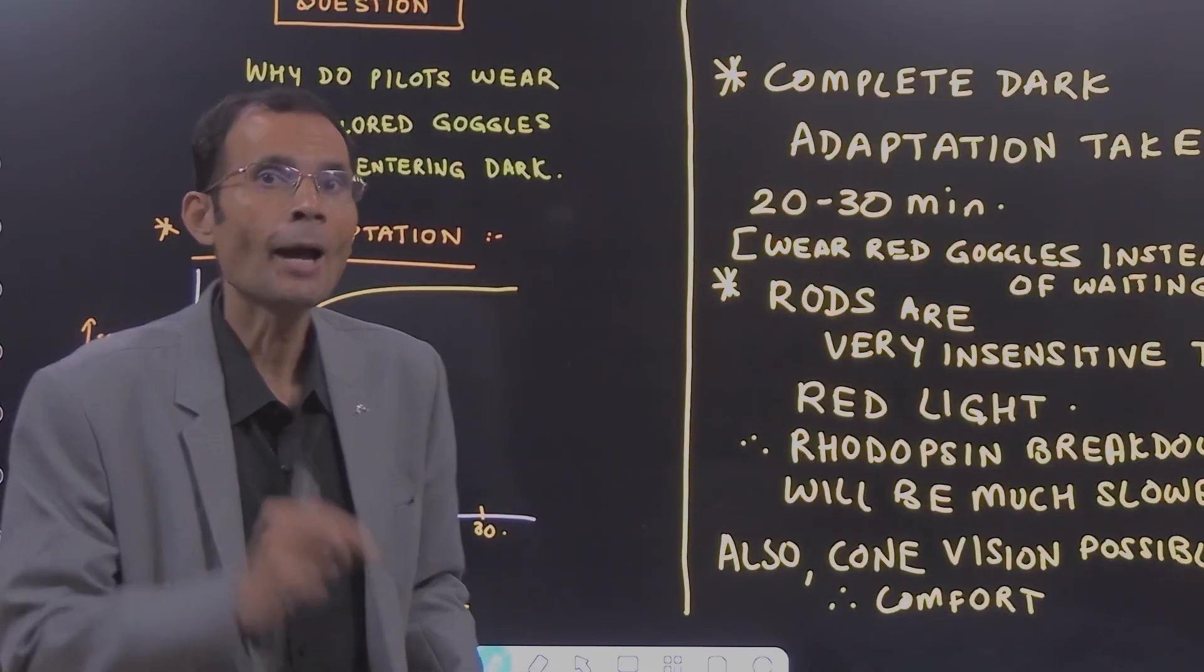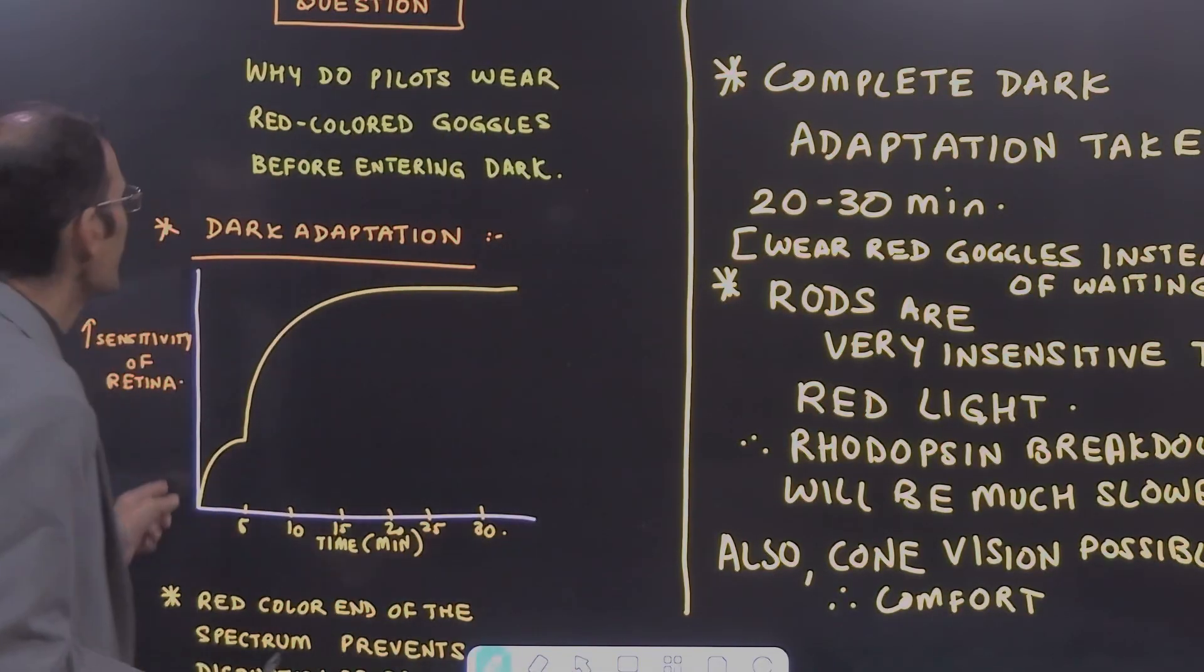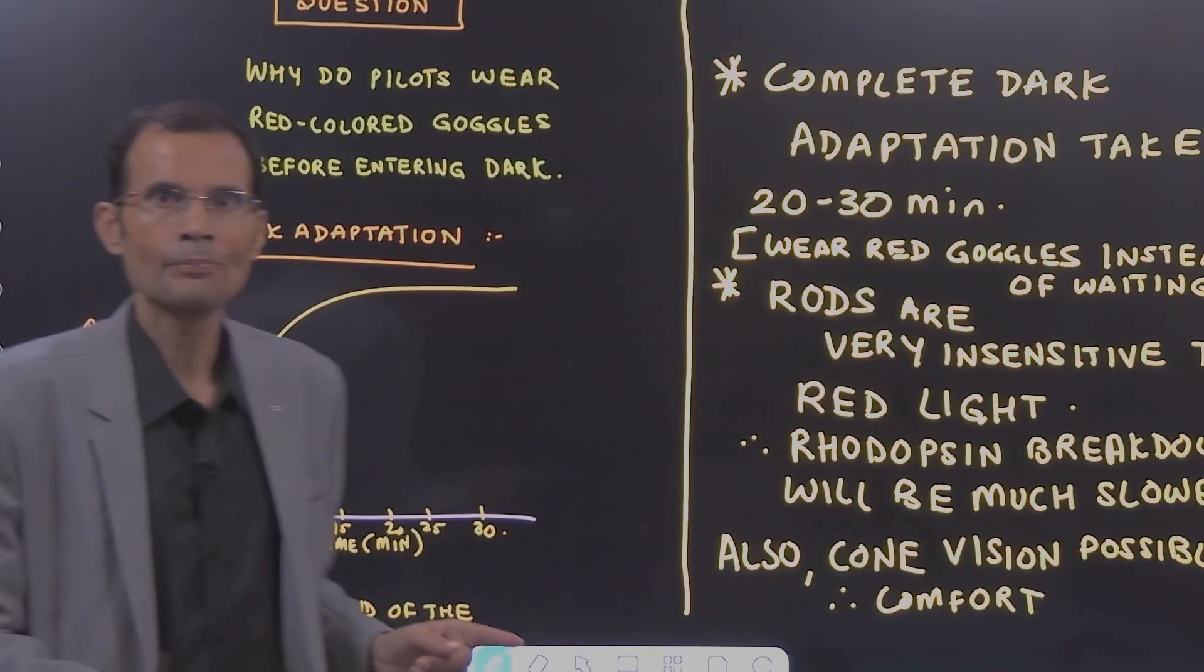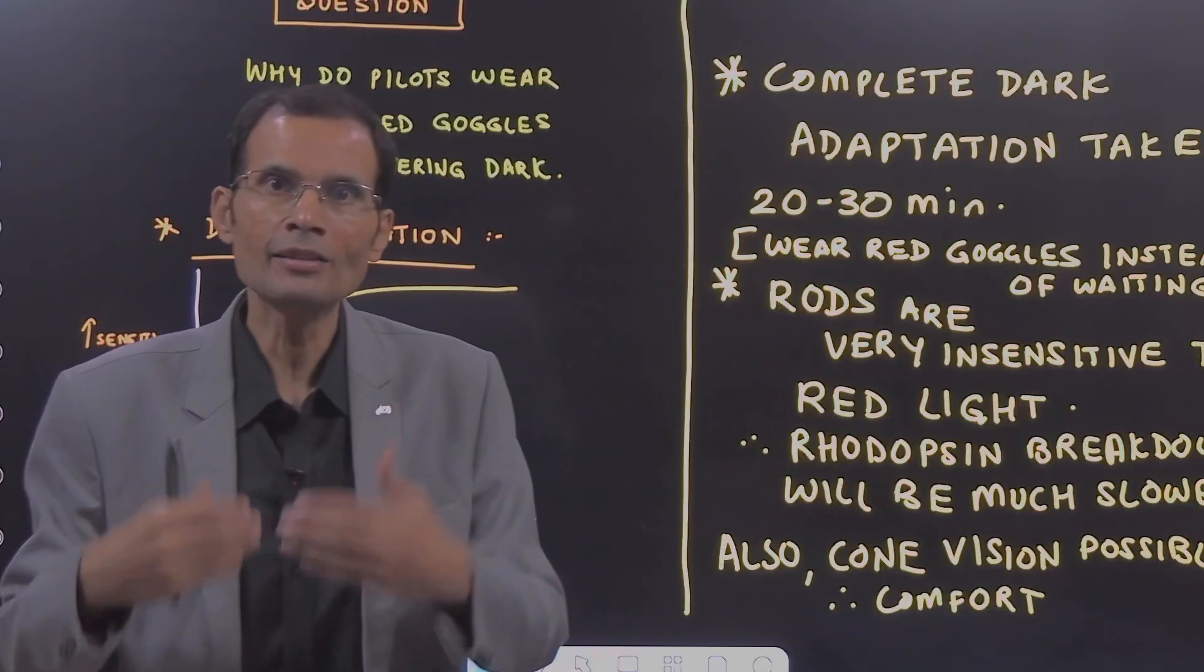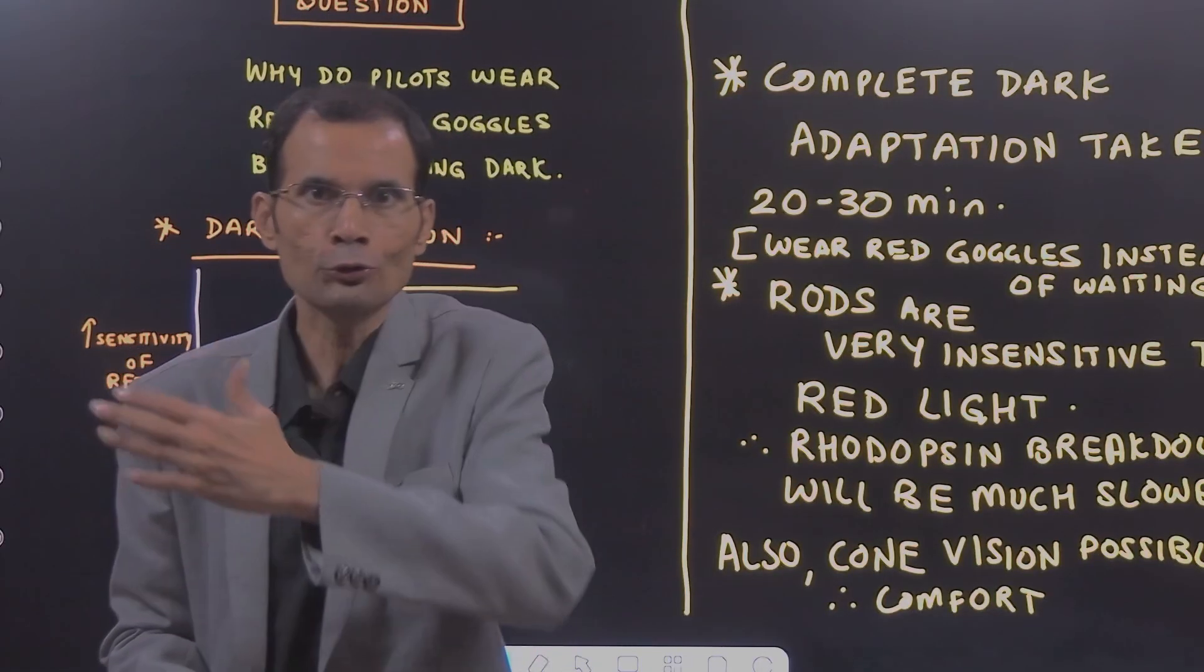Rhodopsin breakdown will be much slower when red coloured goggles are used. Rhodopsin breakdown will happen because there is resynthesis of rhodopsin but that rhodopsin will be utilised because there are photons of light.